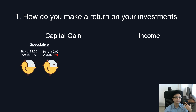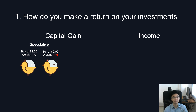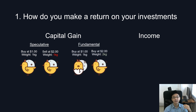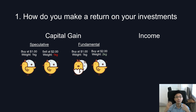A speculative capital gain occurs when there is no change in the value of the assets, but maybe due to higher demand, the asset is now selling at a higher price than it previously was. A fundamental capital gain occurs when there is a visible improvement in the value of the assets, and because of that, it is now worth more than what it previously was.